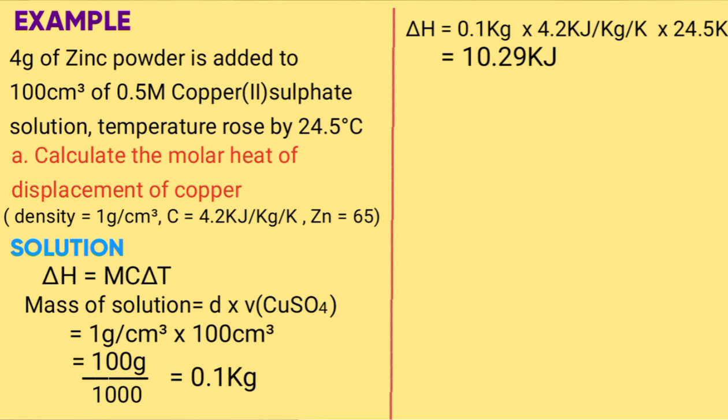Step 2 is find the number of moles. Because you are given both the mass of zinc and volume and molarity of copper sulfate, that means you have to find both the moles of zinc and the moles of copper sulfate. Number of moles of zinc is mass in grams over molar mass, which is 4 over 65, gives you 0.062 moles.